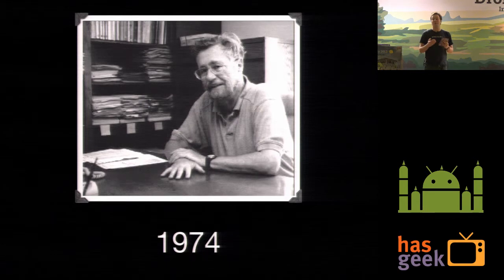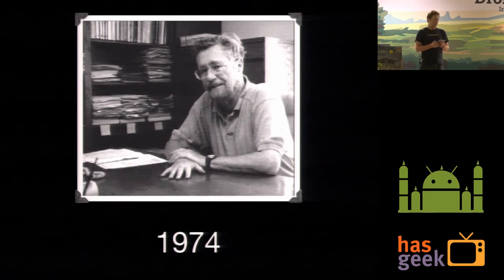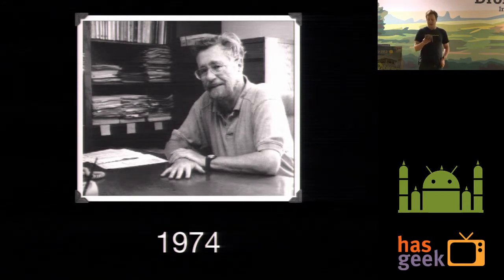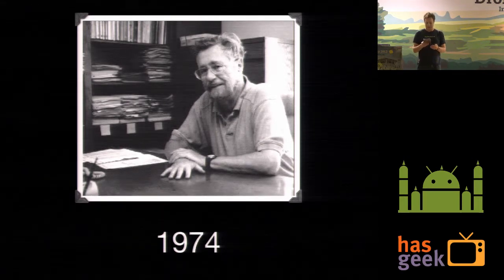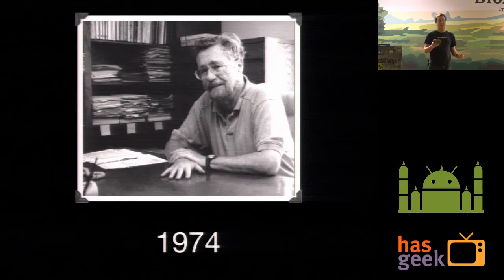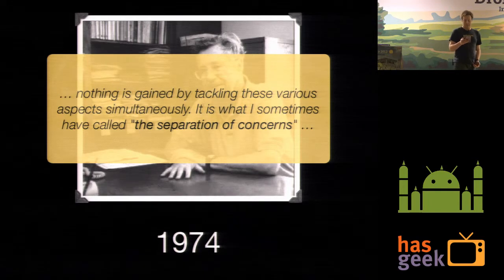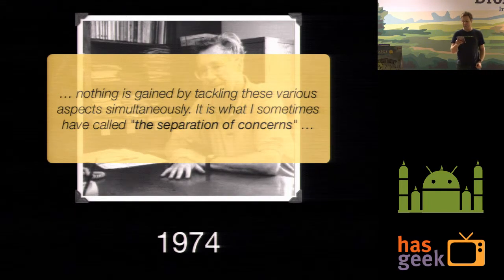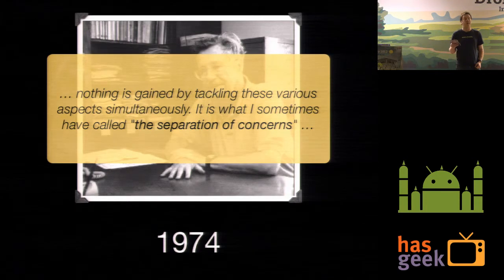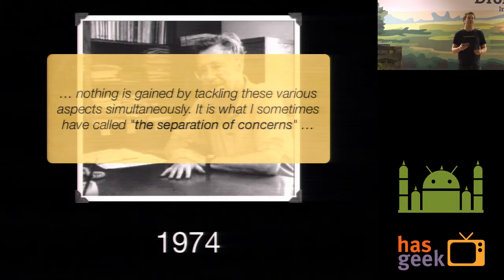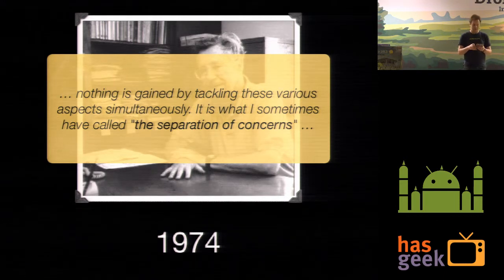This man is Edgar Dijkstra. You've probably heard of his algorithm. He wrote a paper in 1974 in which he was asked how best to analyze a computer program. He noted that for any program, you can consider any number of things as worthy of analysis, but rather than considering them all at the same time, it's best to analyze things as a sum of their parts. Considering each aspect separately allows you to think about how each part of your program works in isolation, and then you can think about two aspects only when they interact with each other.